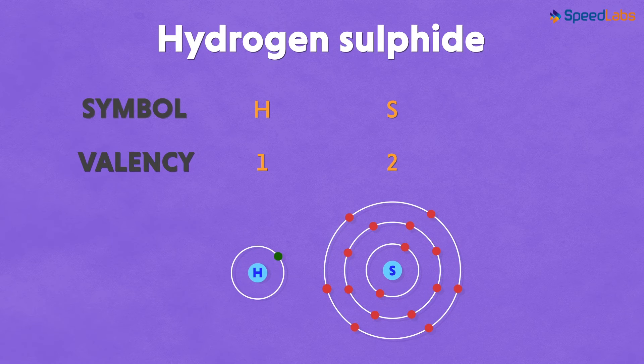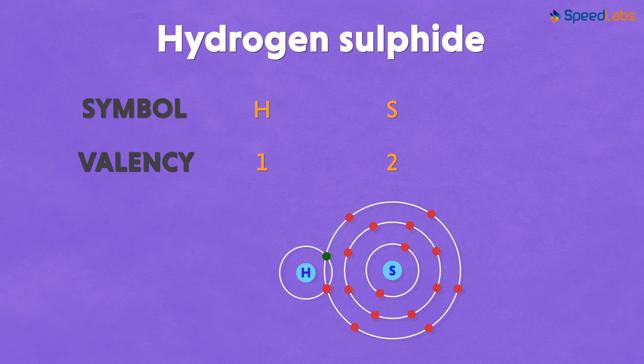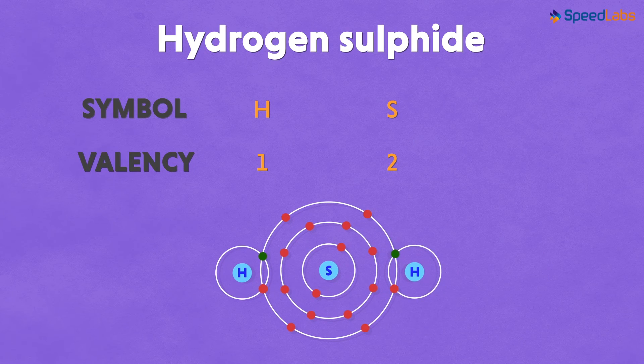Now since one hydrogen atom can give only one electron, it's obvious that we will need two hydrogen atoms in this bond. And why so? Because Sulphur needs two electrons, right? Its valency is 2.